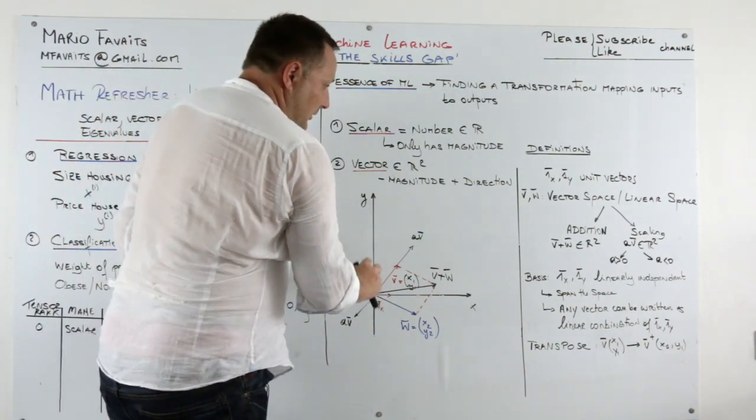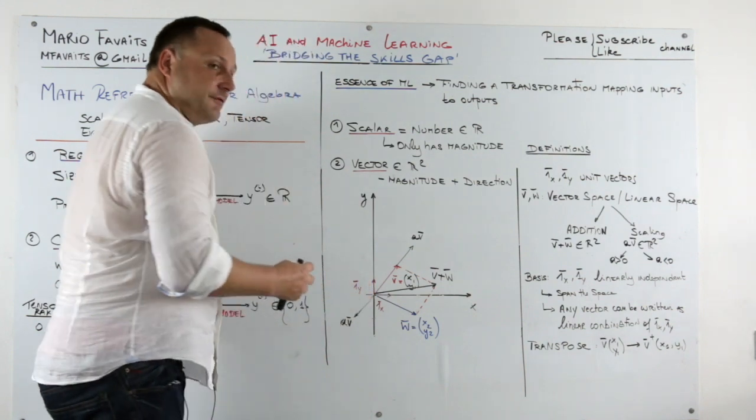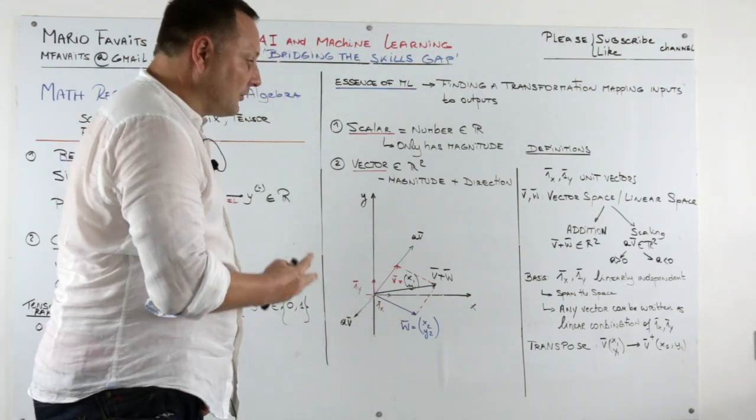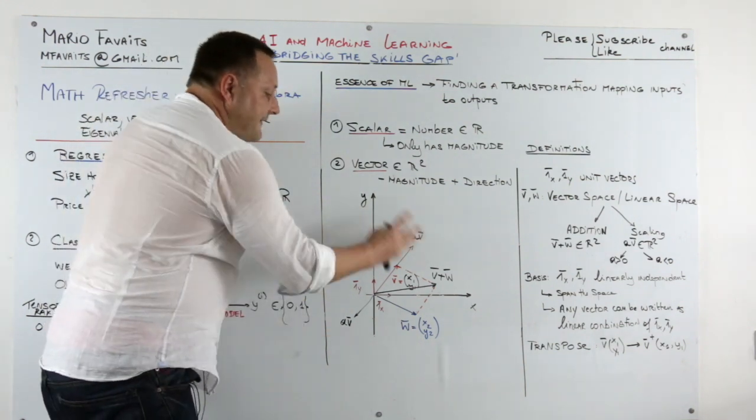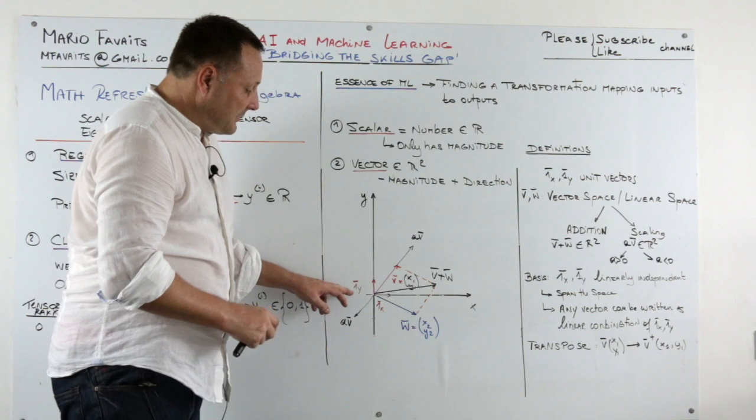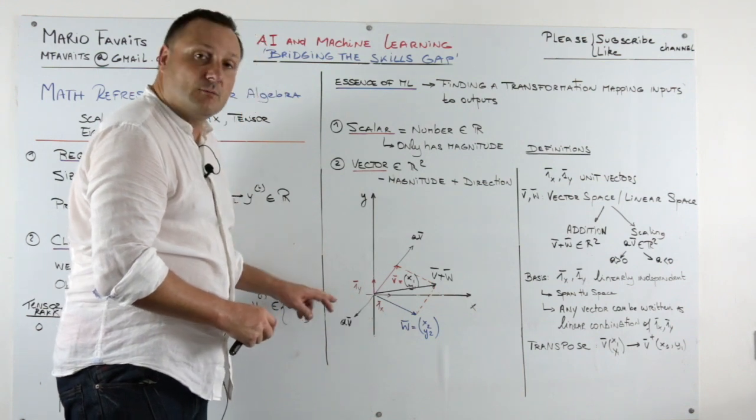So, two linearly independent vectors form a vector space. And they span the whole space. So any vector in this space can be written as a linear combination of the unit vectors 1x and 1y.